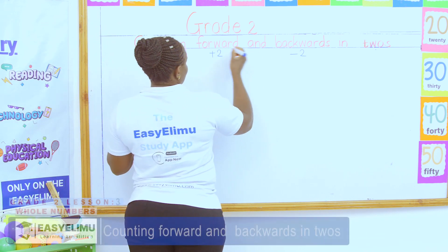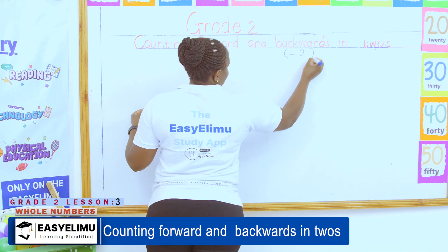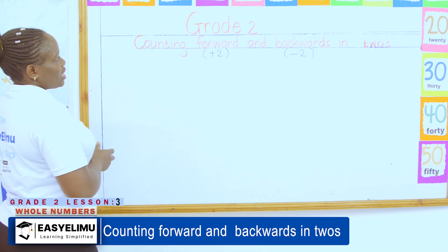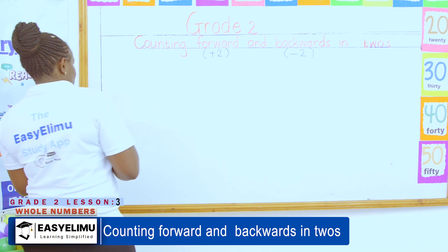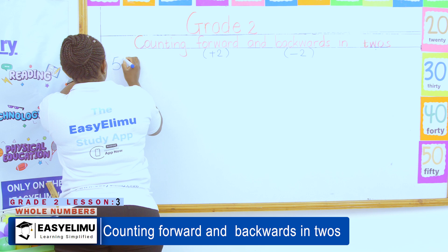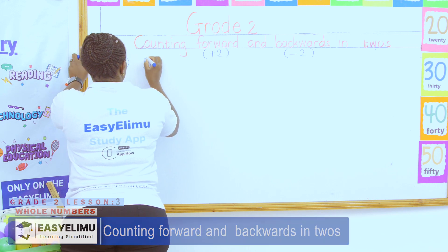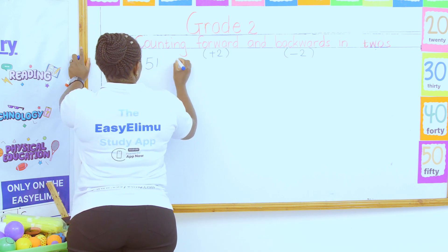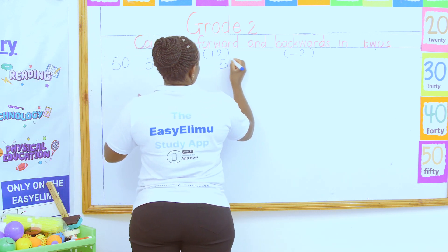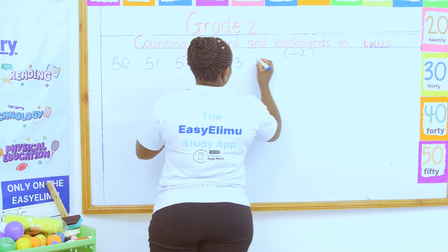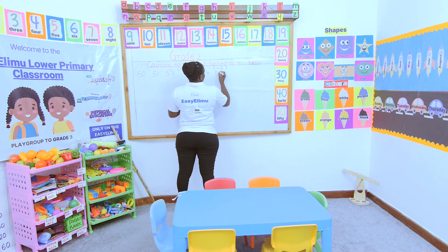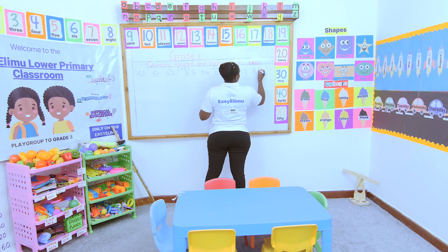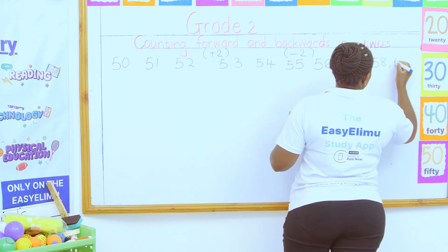So, anytime you're given, count backwards or forwards in twos — this is the first rule you should observe. Our numbers from 50 to 100: we have 50 going forward. When we count these numbers from 50, it will just be 51, 52, 53, 54, 55, 56, 57, 58, 59.